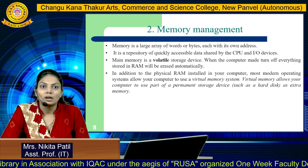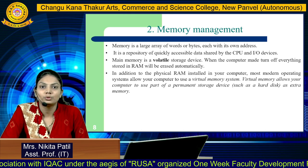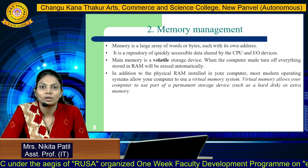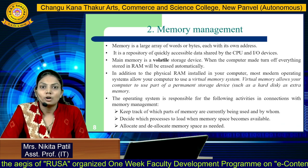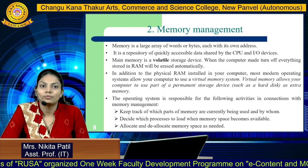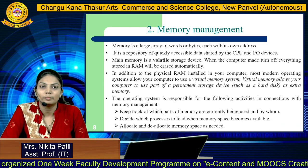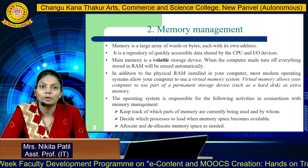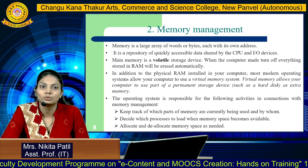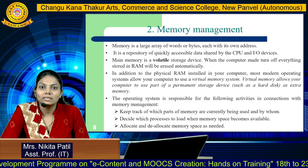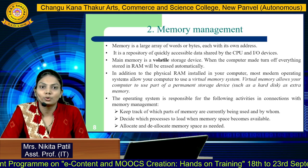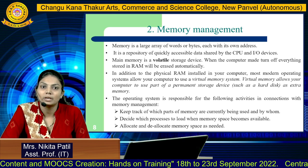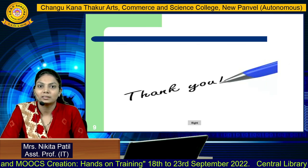In addition to the physical RAM installed in your computer, most modern operating systems allow you to use a virtual memory system — to use part of a permanent storage device such as a hard disk as extra memory. The operating system is responsible for the following memory management activities: keeping track of which parts of memory are currently being used and by whom, deciding which process to load when memory space becomes available, and allocating and deallocating memory space as needed.